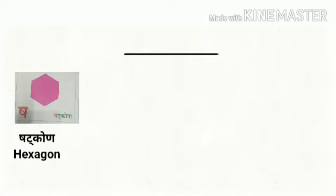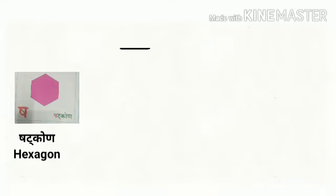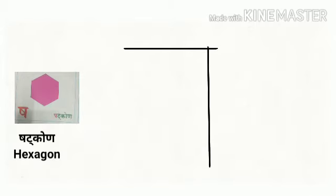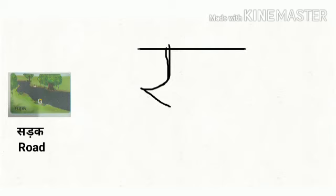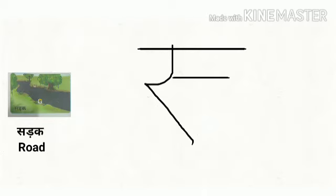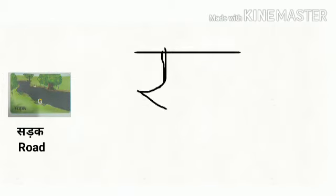Sha se Shatkoon — Hexagon. Sha se Shatkoon ke chhaikon, sab ke sabcho lagetrikoon. Sha se Sadak — Road. Sha se Sadak hai lambi chodi, jispar gaadi meri daudi.